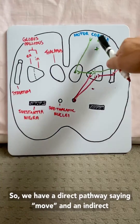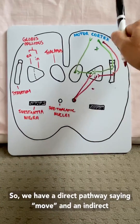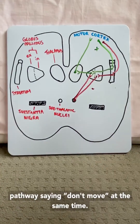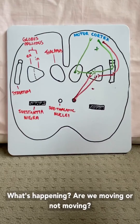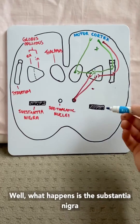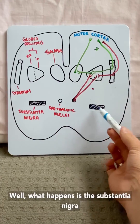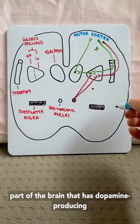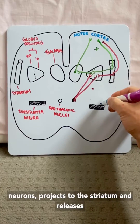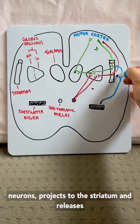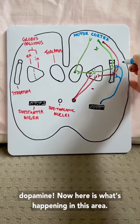So we've got a direct pathway saying move and an indirect pathway saying don't move at the same time. Are we moving or not moving? Well, what happens is the substantia nigra — a part of the brain that has dopamine-producing neurons — projects to the striatum and releases dopamine.